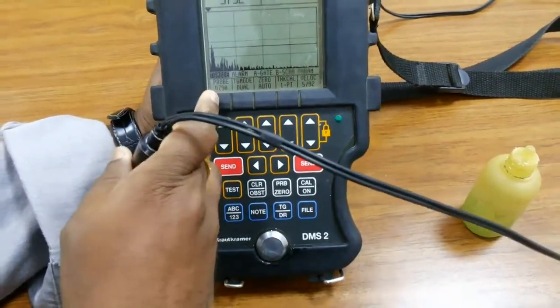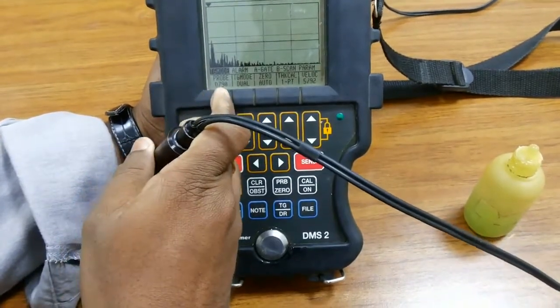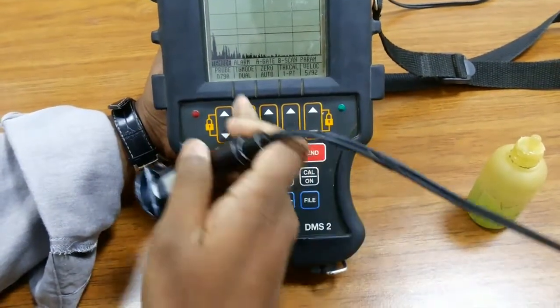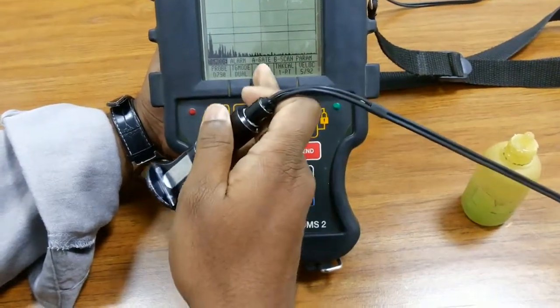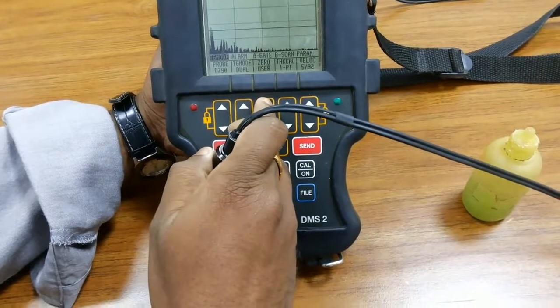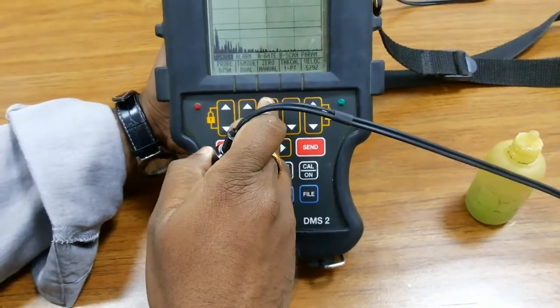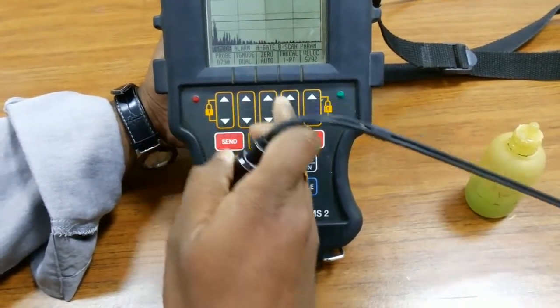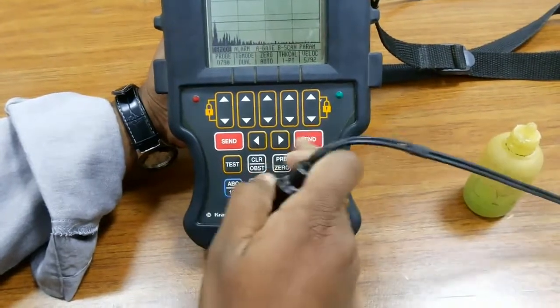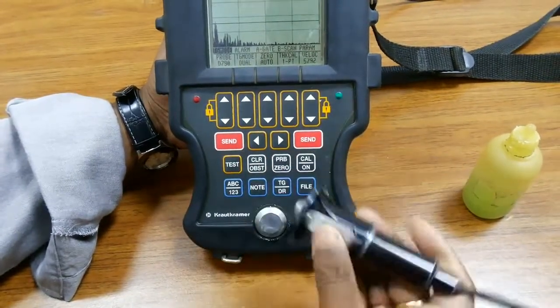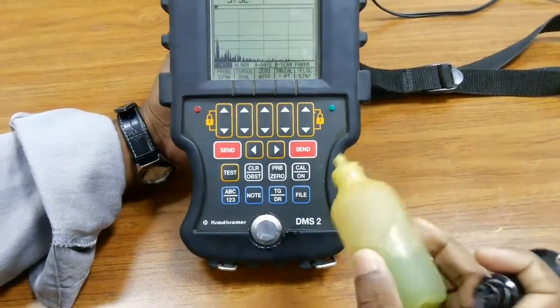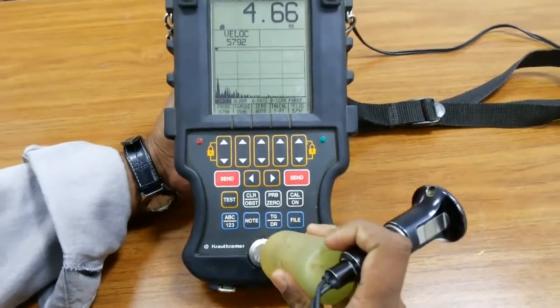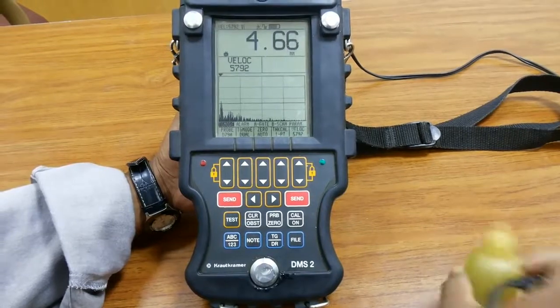The probe selection shows D790. Then go to the triggered module. You can select zero as user manual or auto - put it on auto so you can calibrate automatically. Then we apply coupling on the calibration block.